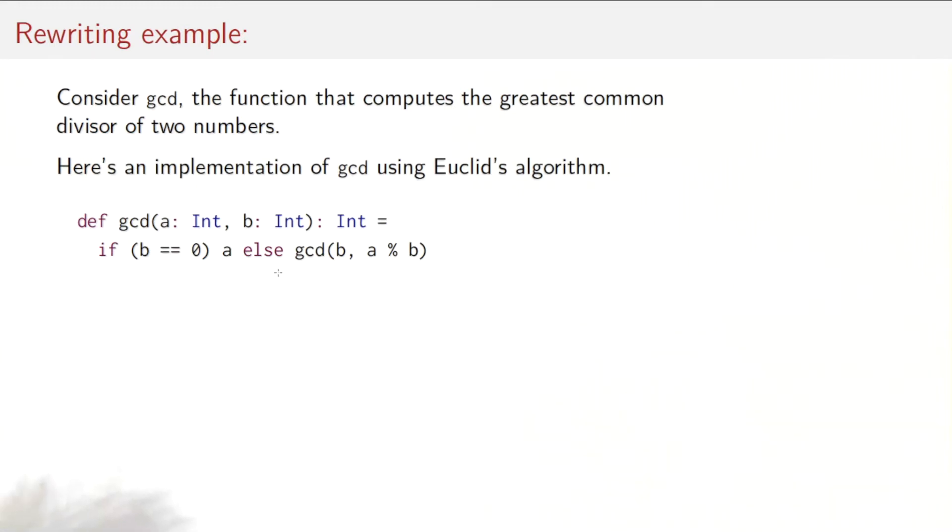Here's an example. Consider gcd, the function that computes the greatest common divisor of two numbers. We know an implementation for gcd since a very long time, since ancient Greek. It's known as Euclid's algorithm. To compute the greatest common divisor of two numbers a and b, what do you do? First, if b is zero, then a is a common divisor of both a and b. And otherwise, you compute the greatest common divisor of first b, and then a modulo b. The percent sign here is as in Java and C means a modulo b, the modulus of a and b.